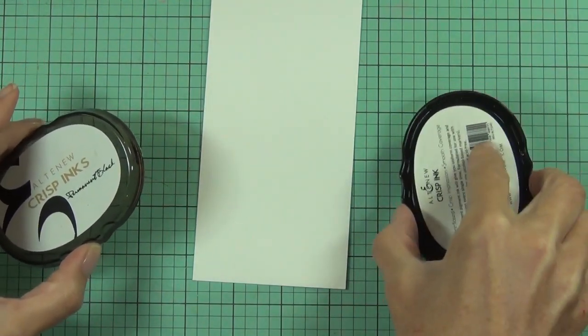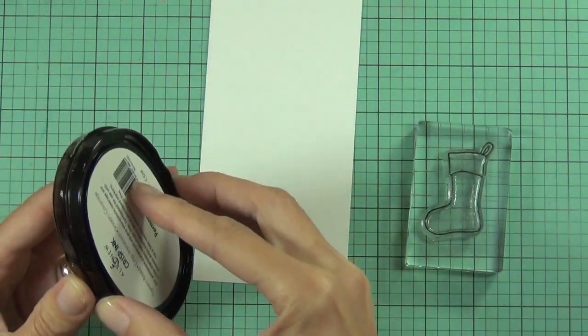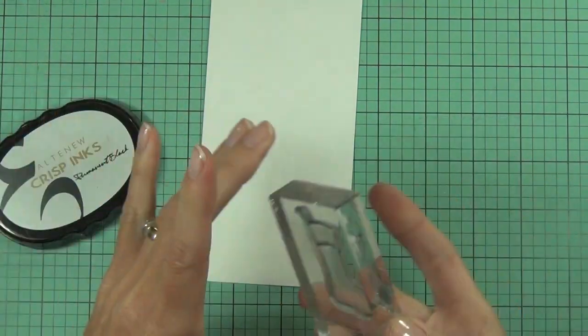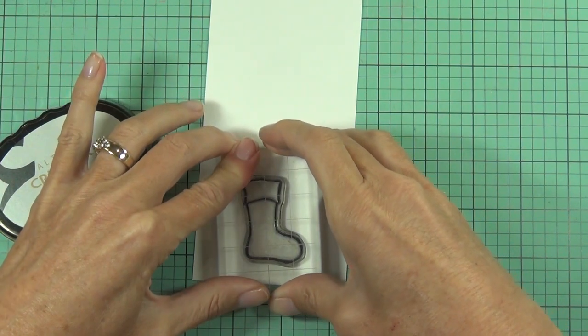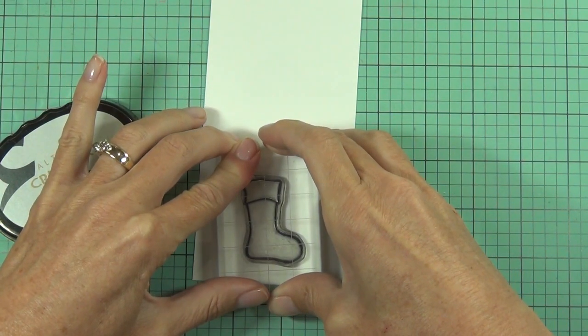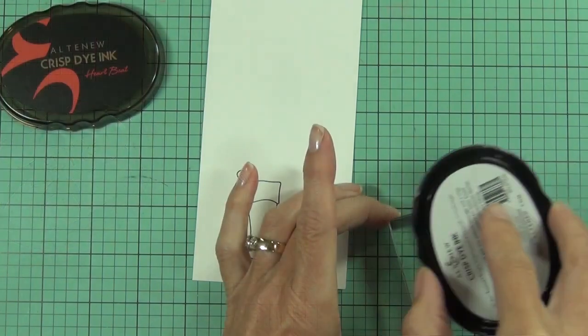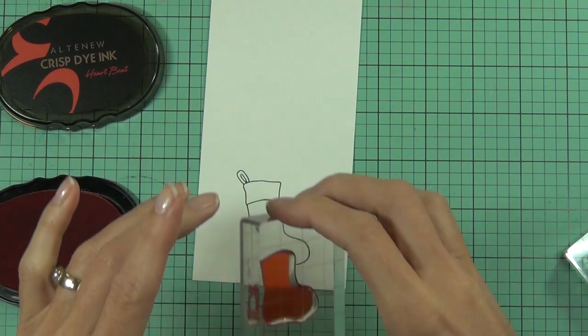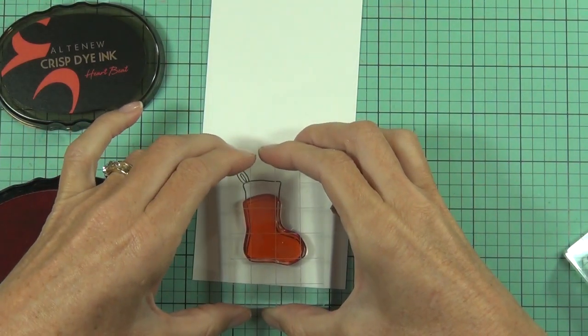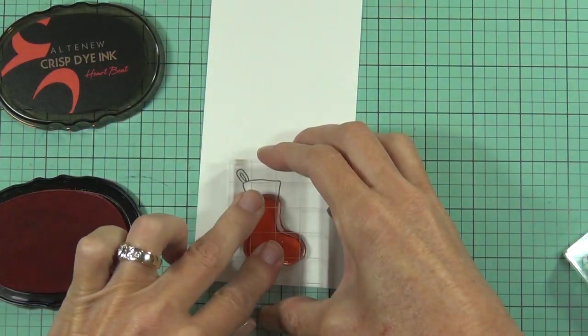Like I said this is a layering stamp set, I'm not doing any of the patterns here but I have got some examples over at the blog. There are three cards in total using this set so lots of inspiration and you can also find more inspiration from the release post as well. So I'm using my favorite red, this is called heartbeat.